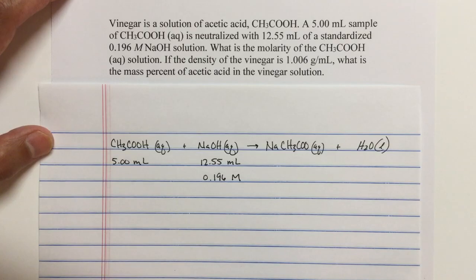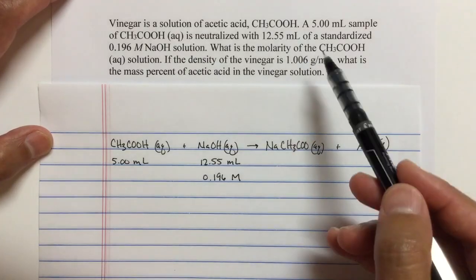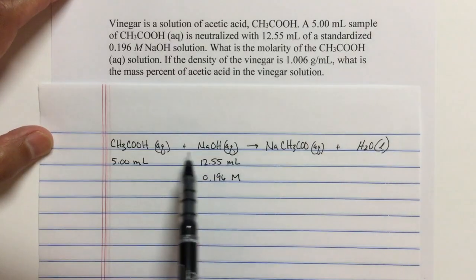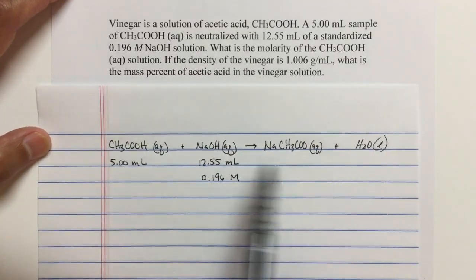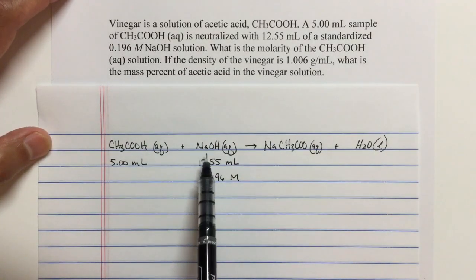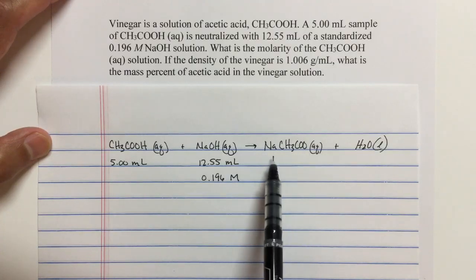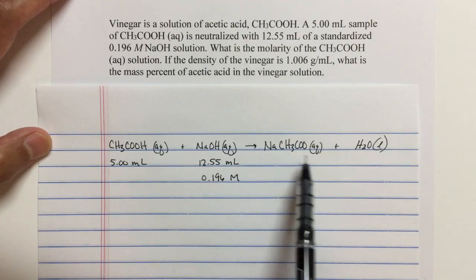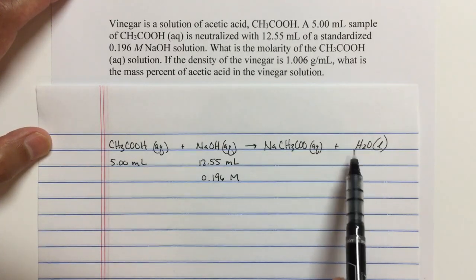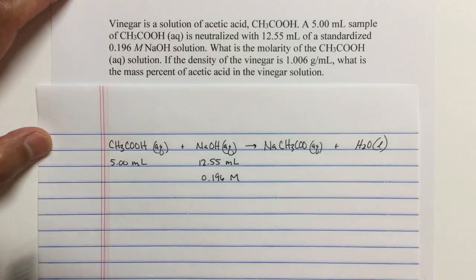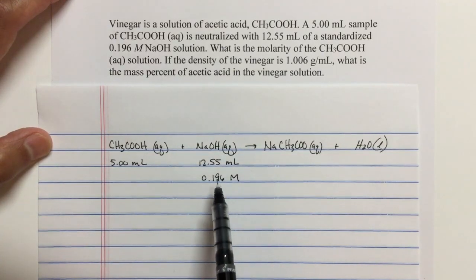So first, let's do our stoichiometry. Again, the problem doesn't give you the balanced equation, so I've already gone ahead and written that out. Acetic acid reacts with sodium hydroxide. If you do this double displacement reaction, you'll see that the products are sodium acetate. And of course, the other product of the acid-base reactions, you usually get this water product at the end. I've also written the data down.